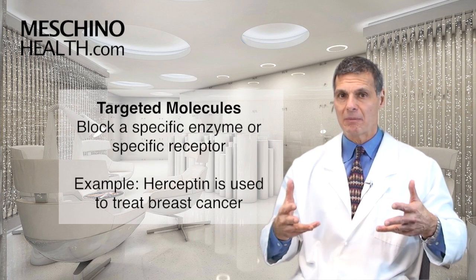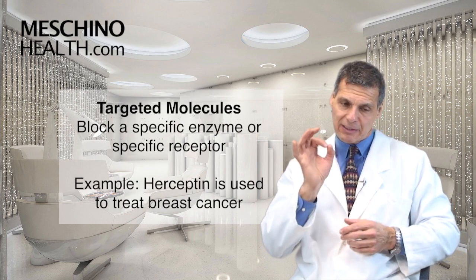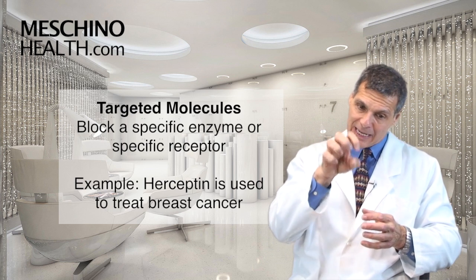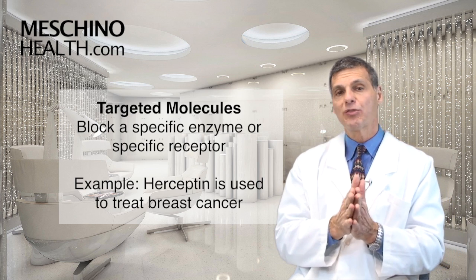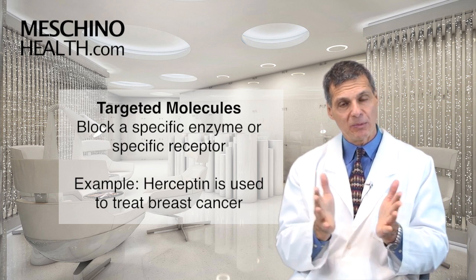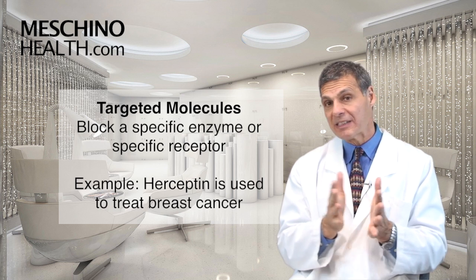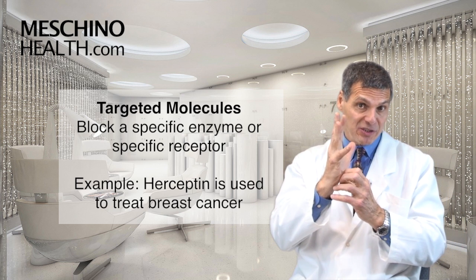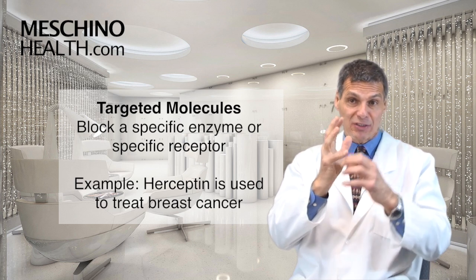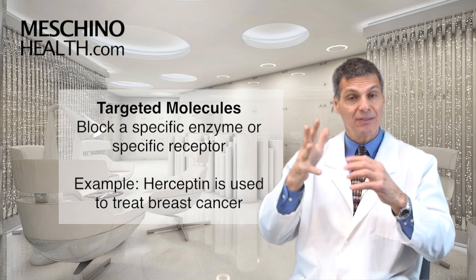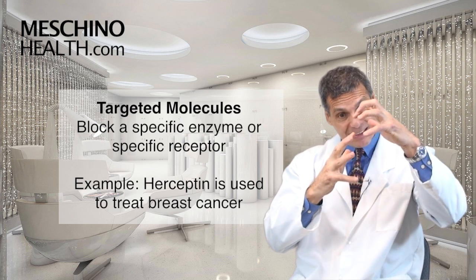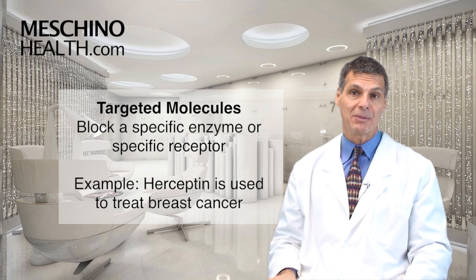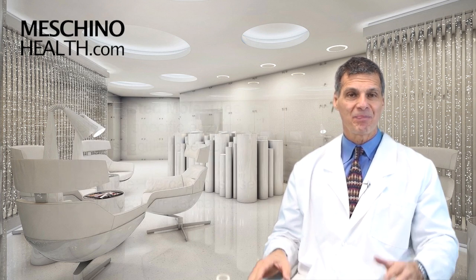Then there are targeted molecules that affect a specific enzyme or receptor and block its action. For example, the drug Herceptin is used for breast cancer patients who have a particular receptor on the cell surface that's driving cell division — you can destroy that receptor with Herceptin. So these are targeted molecules.